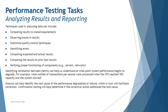There are various techniques for analyzing performance test results: comparing results to stated requirements, observing trends in the results, applying statistical quality control techniques, identifying errors, comparing expected with actual results, comparing results to prior test results, and verifying proper functioning of components. These techniques help derive analysis outcomes — from statistical precision to identifying execution errors and comparing expected versus actual results.